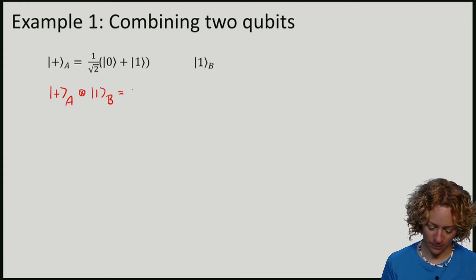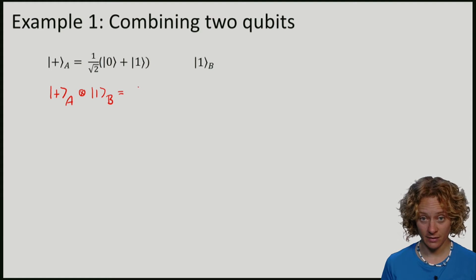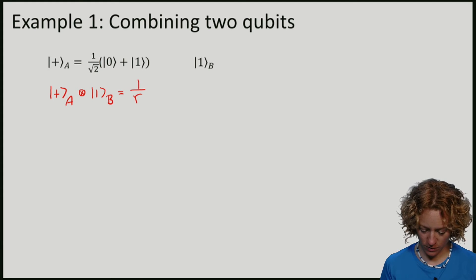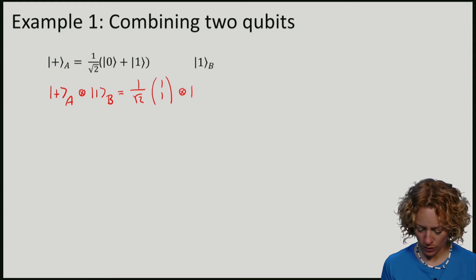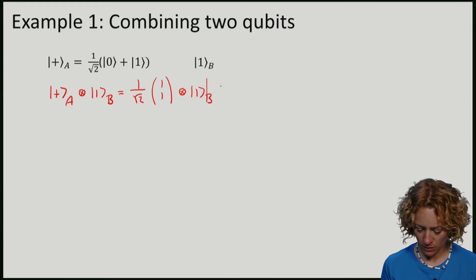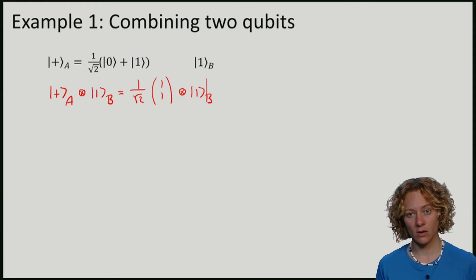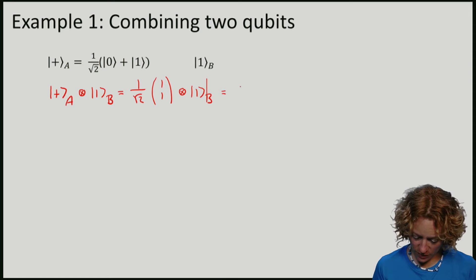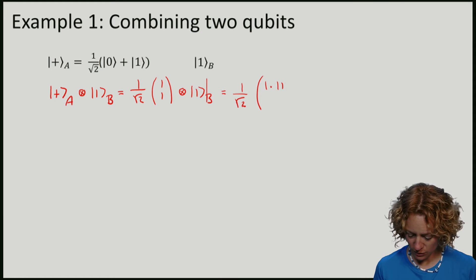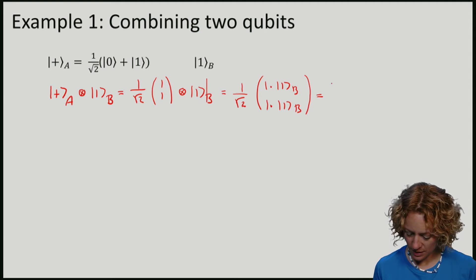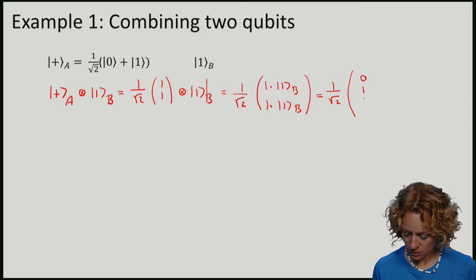First I will apply the definition where I expand 1 over square root 2 times (1, 1) tensor 1 on B. If I apply the definition, I have 1 over square root 2, with 1 times the vector for B, and 1 times the vector for B. So what this gives me is 1 over square root 2 times (0, 1, 0, 1).